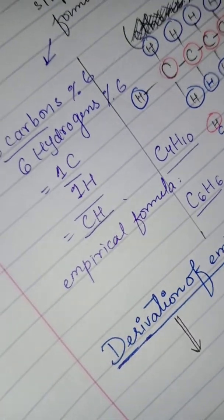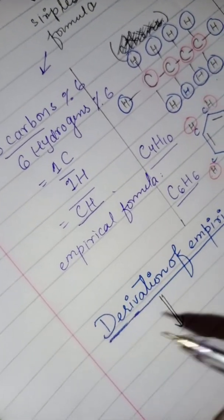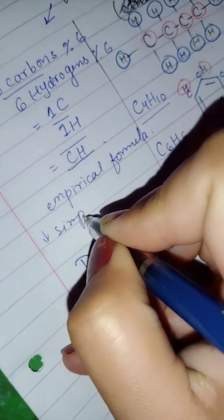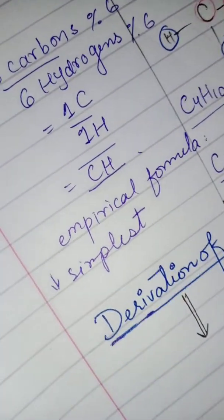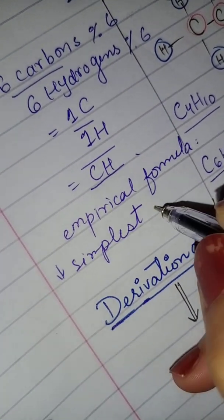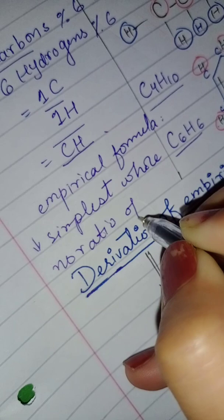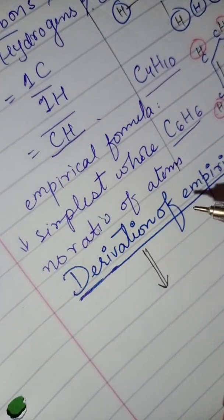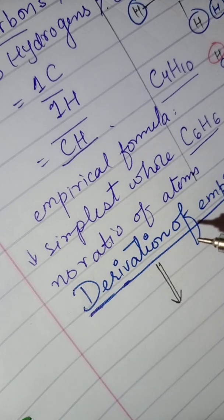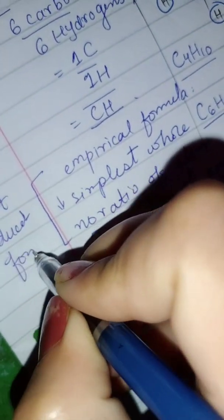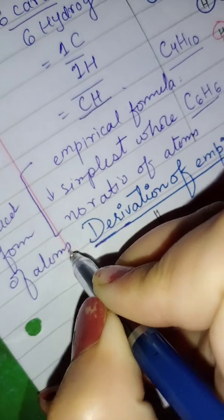Now I can define the empirical formula: it is the simplest whole number ratio of atoms present in a compound. You can also say that the empirical formula is the most reduced form of atoms present in a compound.